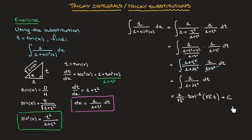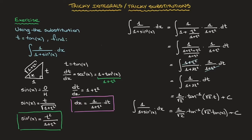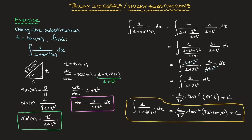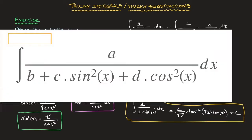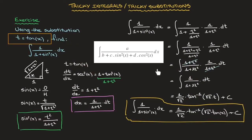Finally, we rewrite the result in terms of x. Replacing t with tan of x, the answer is 1 over √2 times arctan of √2 · tan x, plus C. That's the final answer — the integral of 1 over (1 + sin²x) using the substitution t equals tan of x. Note that this substitution works similarly for any integral of this form.